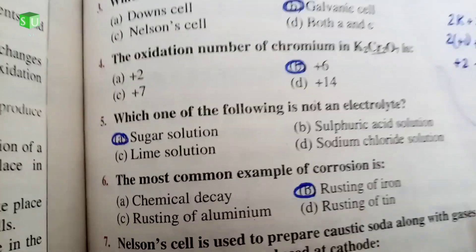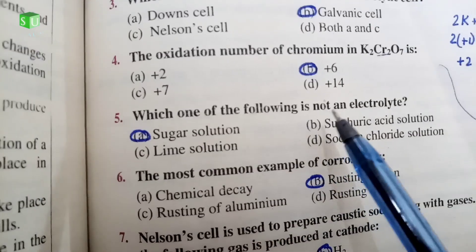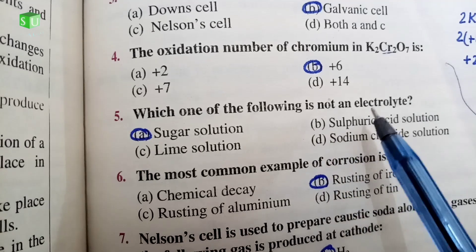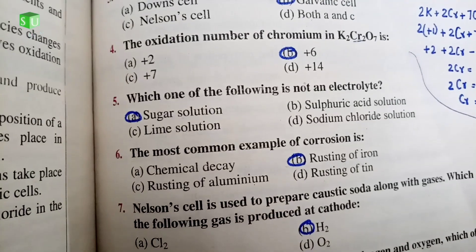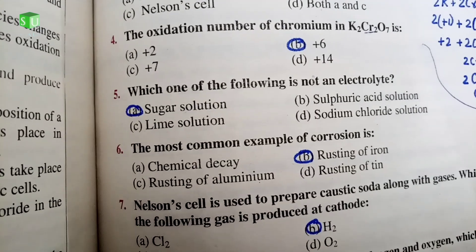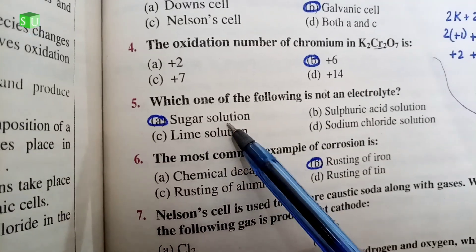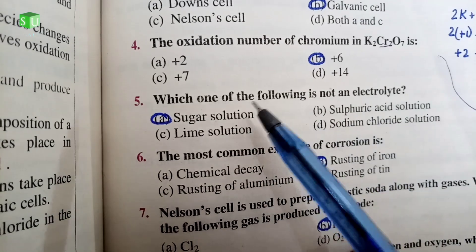So the correct answer is B. Next is number 5: Which one of the following is not an electrolyte? Electrolyte conducts electricity. We call it a conductor. So in sugar solution, we cannot conduct the electricity.